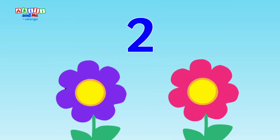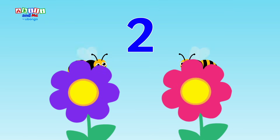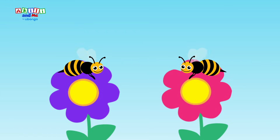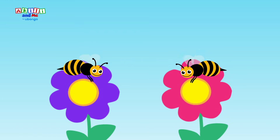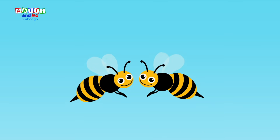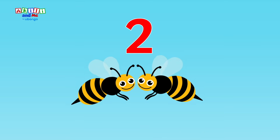Two flowers I can see, each one with one bee. That means all together there are two bees.